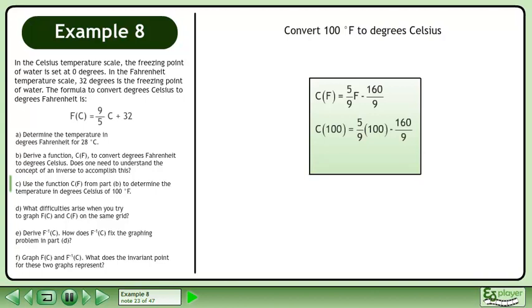Replace the function input with 100. c at 100 equals 37.8. Therefore, 100 degrees Fahrenheit is equivalent to 37.8 degrees Celsius.